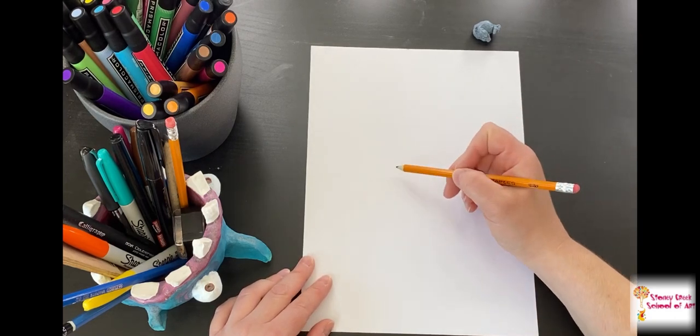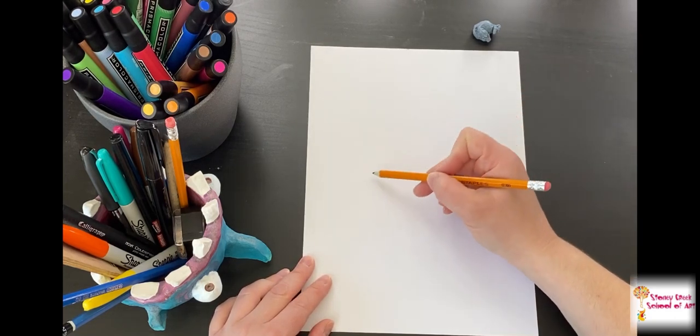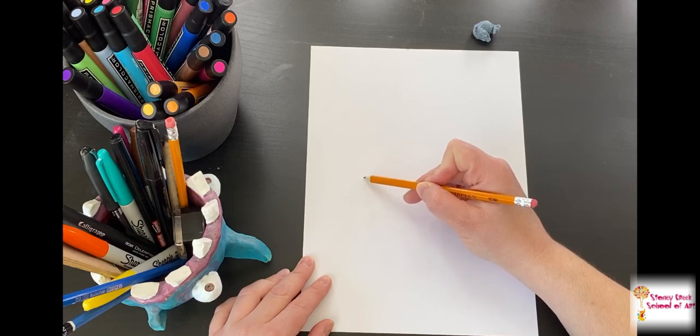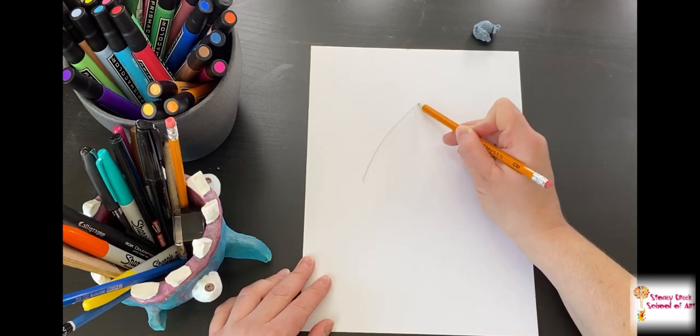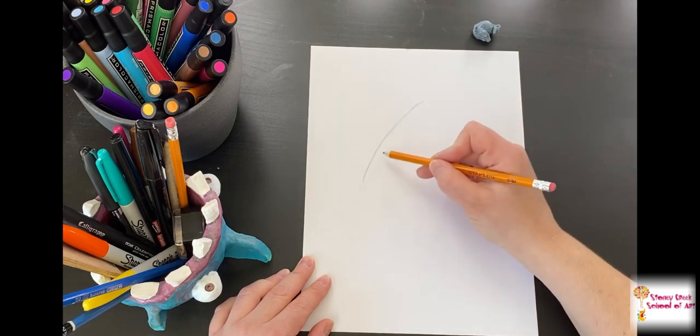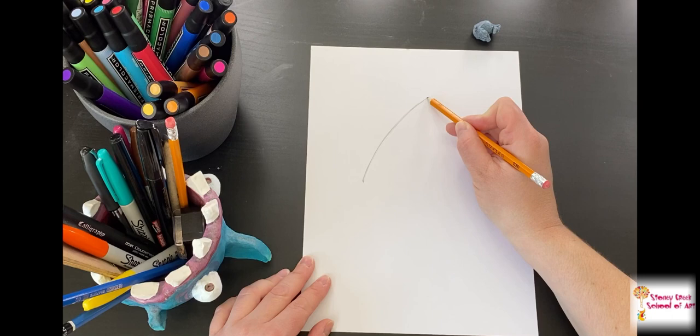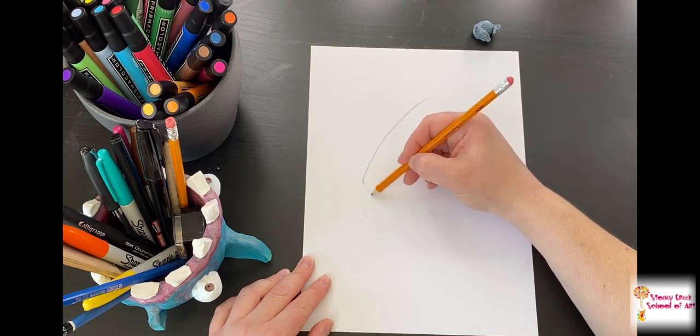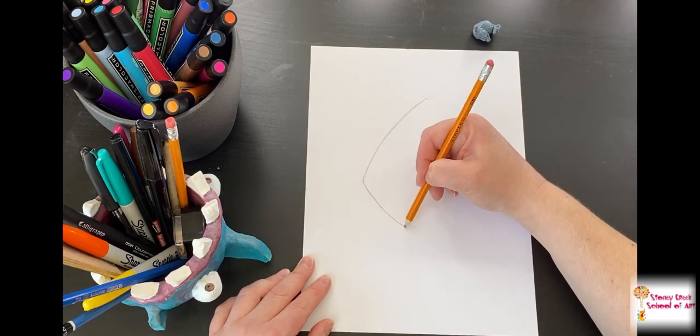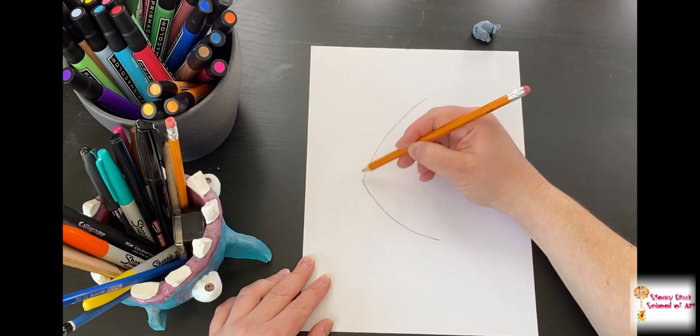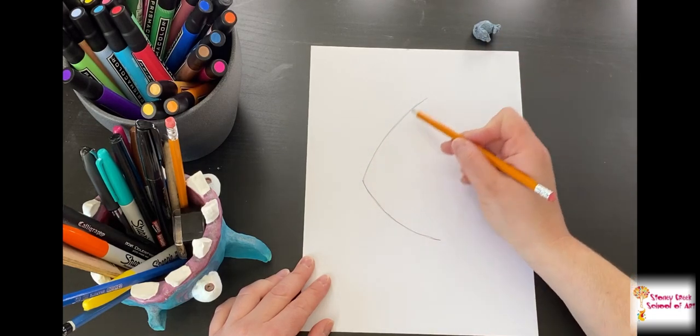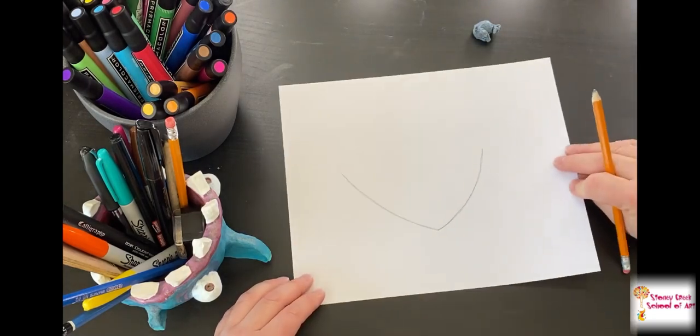We're going to start with a very basic step, just a diagonal curve. I'm starting here, curving slightly up, and then doing the same type of line in the other direction. It looks like a big flared-out letter V.